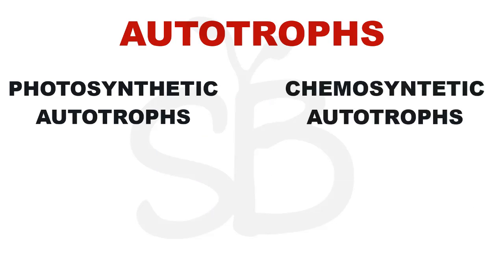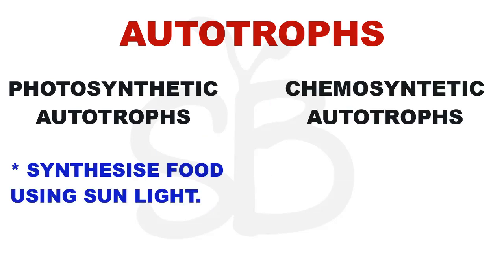There are photosynthetic autotrophs and chemosynthetic autotrophs. These are photosynthetic autotrophs — photo means always related to light. They use sunlight as a food synthesizer.